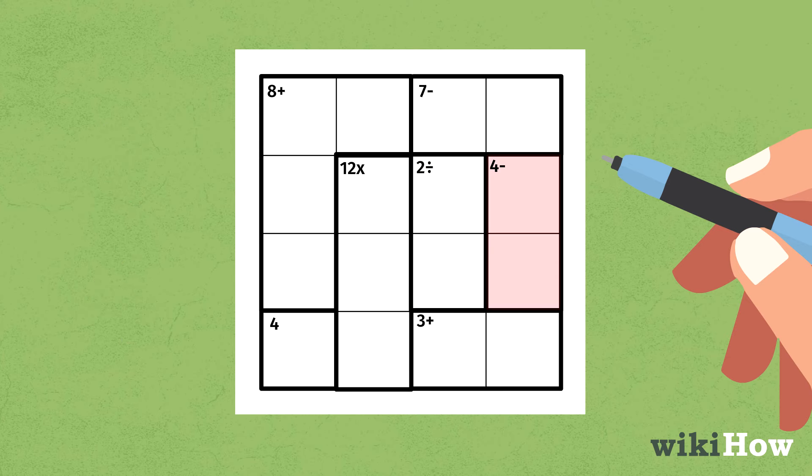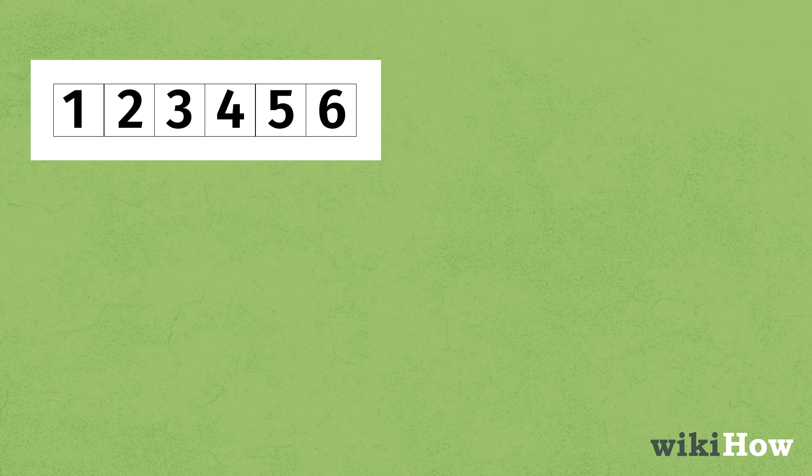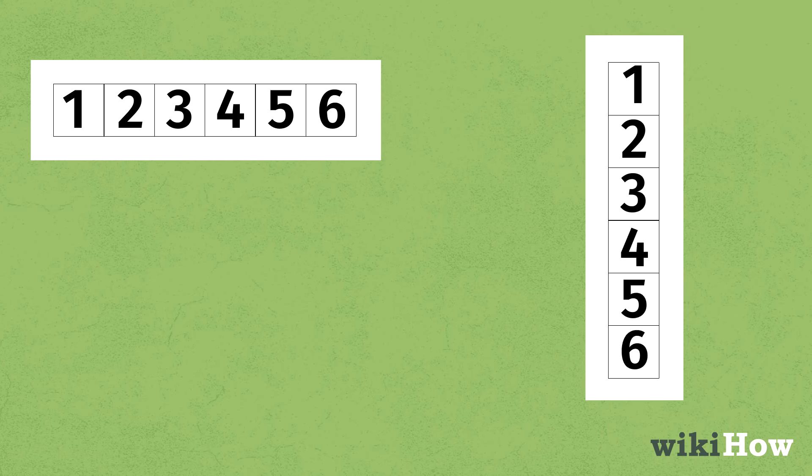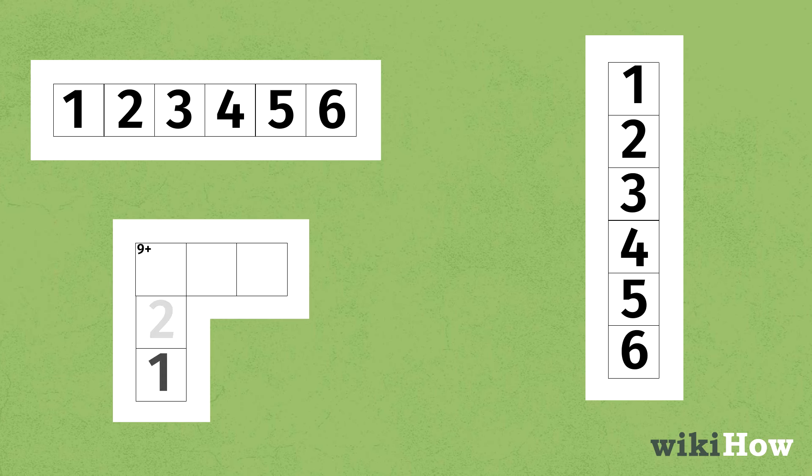Always check all three sets of clues before putting in a number. These rules are: only one of each number in each horizontal row, only one of each number in each vertical column, and the answer to the cage matches the number and mathematical symbol in the upper left corner.